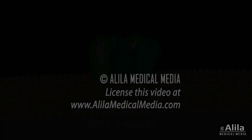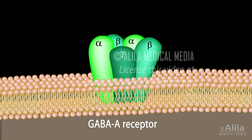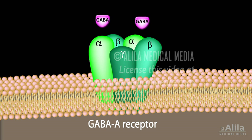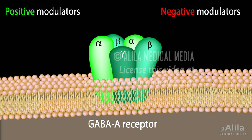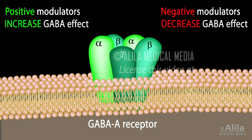The GABA-A receptor is composed of five protein subunits. In addition to binding sites for GABA, it has allosteric binding sites for other substances known as GABA modulators — molecules that can increase or decrease the action of GABA but have no effect in the absence of GABA.